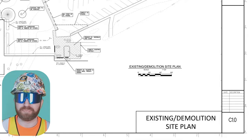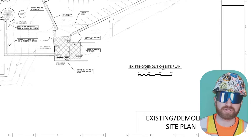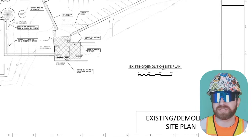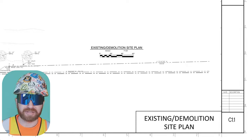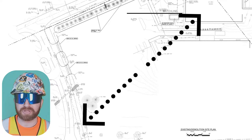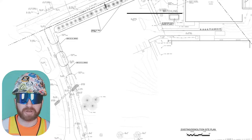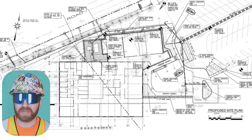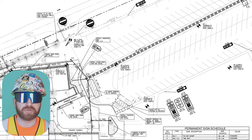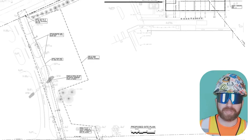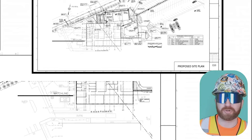C0.3 is miscellaneous construction details continued. C1.0 is the existing and demolition site plan. If there is demolition on your project, each set — architectural, electrical, mechanical — may have its own demolition plan, or sometimes the architect and engineers combine it onto one singular plan. C1.1 is existing and site demolition plan continued. This tells me the project likely takes up a large square footage, which required the design team to split it into multiple sheets, so I'm going to expect that from here on out.